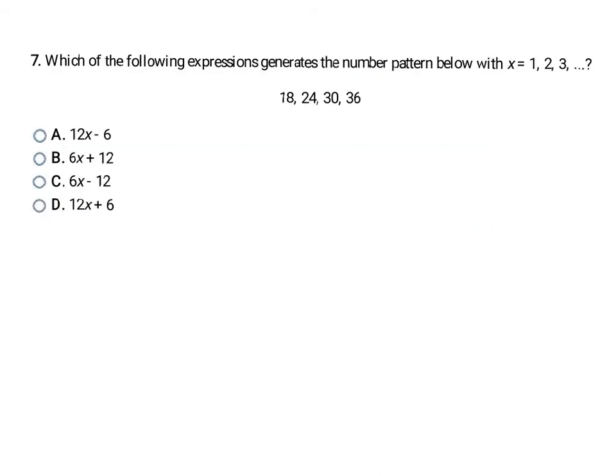In these following problems we're going to be writing the rule for the pattern as an expression instead of as a sentence. So these work a little bit differently. You're going to be looking at the rule for the first term, that's when x equals 1. What would you do to 1 to get to 18? And then what could you do the same to 2 to get to 24? And then 3 and 30.